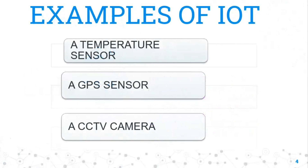Now we know what is IoT. Let us look at some examples of IoT. There are different examples, and in this presentation I will discuss some of them. The first one is the temperature sensor, secondly a GPS sensor, and third a CCTV camera. A temperature sensor reads the temperature of a particular location and transmits the data via the Internet to a web server, so we can know the temperature of any particular place.